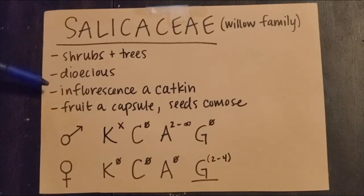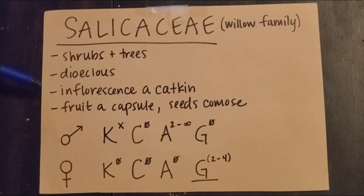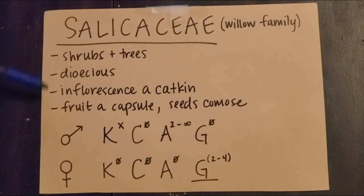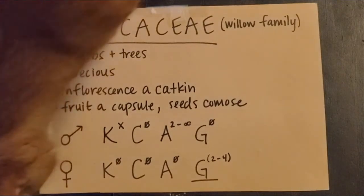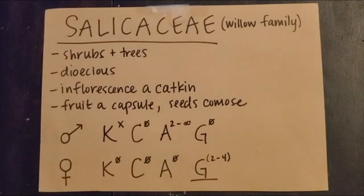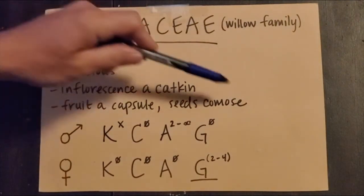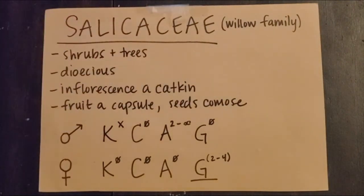The inflorescence is a catkin, and if you'll remember, this is a dense, spike-like inflorescence of reduced unisexual flowers. Our fruit is a capsule, and the seeds are comos. Comos just means there's essentially a tuft of hair on the seed that, in this case, aids in wind dispersal.